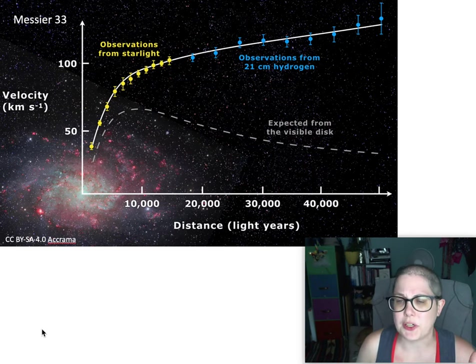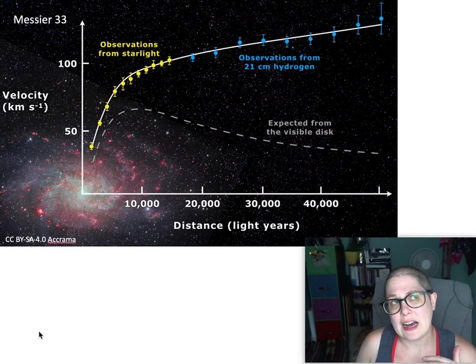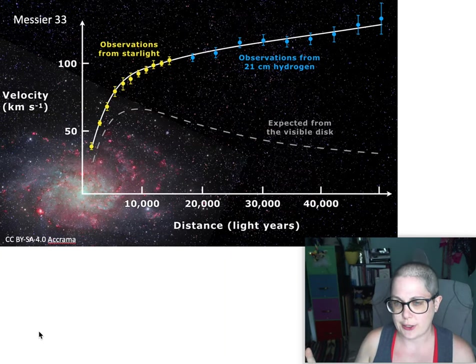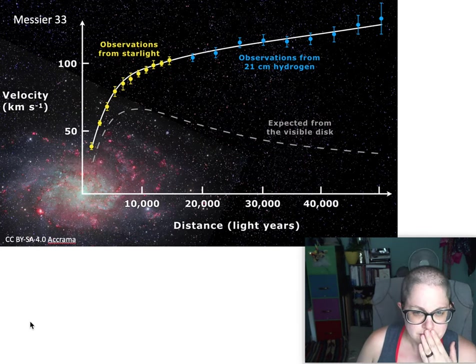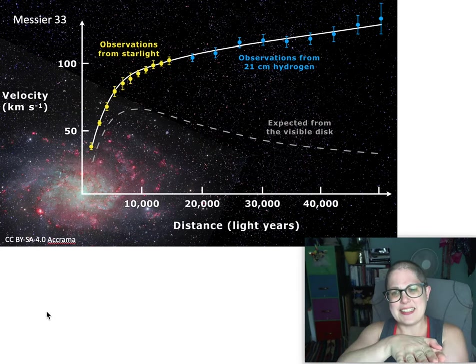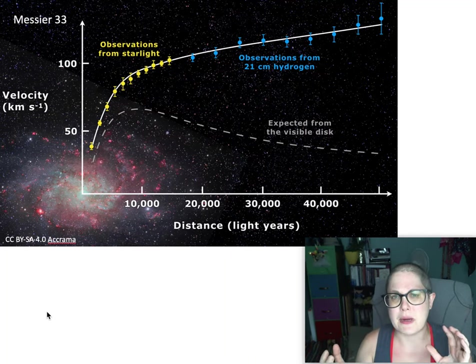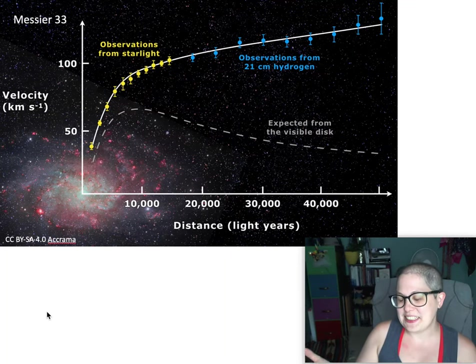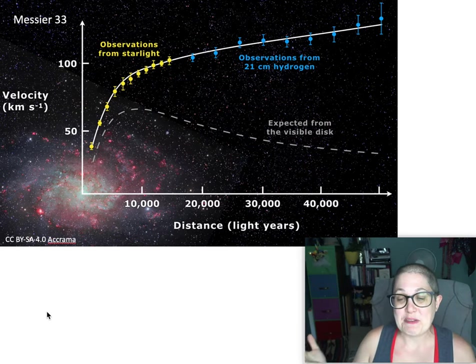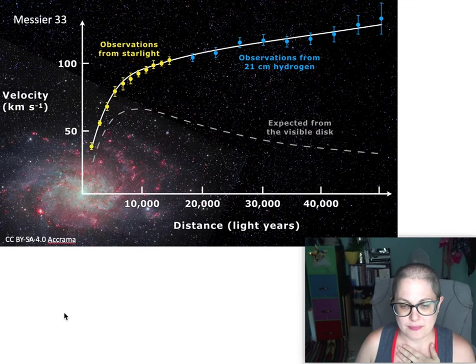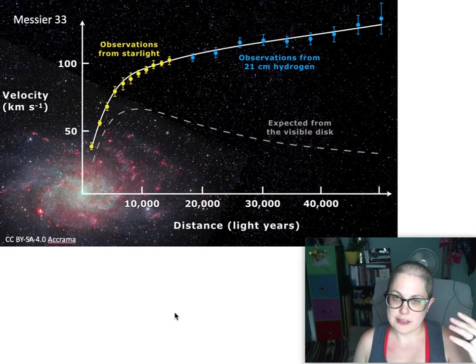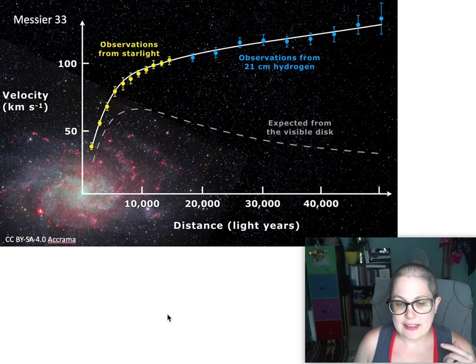This example is of another galaxy M33, Messier 33, but it's similar to what you would see for the Milky Way. And it's really well done so I picked this one. When you look at how fast things orbit around the disk of the galaxy as a function of distance from the center, you see something interesting. A galaxy disk isn't a solid piece. Things orbit at slightly different speeds.